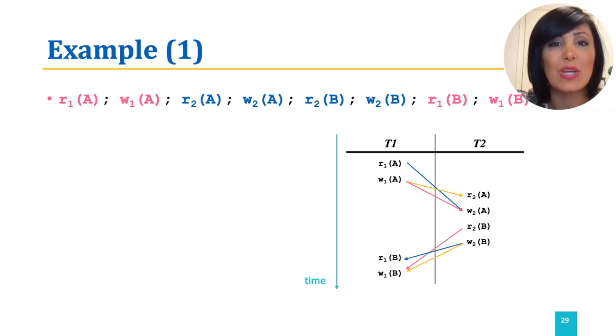Then we start building the conflict graph. We have two transactions, T1 and T2, and therefore two nodes, T1 and T2.